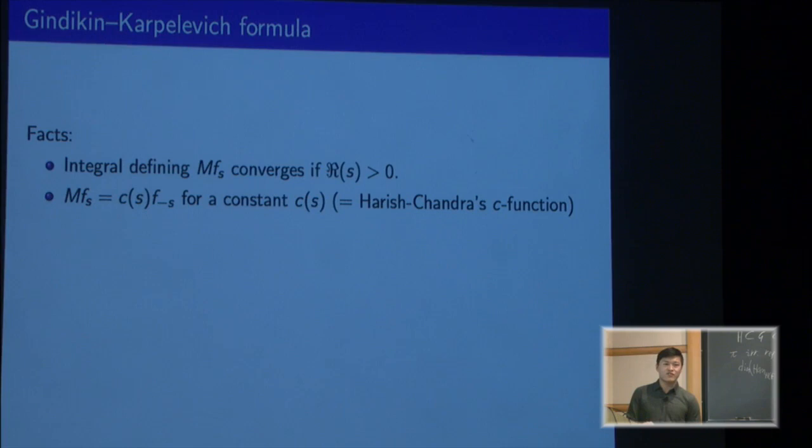If you look at how the Radon transform is compatible with homotheties, you'll see that it has to send any character to a multiple of this character corresponding to minus s. This multiple is going to be some scalar depending only on s. In fact, it has a name: it's Harish-Chandra's c-function.